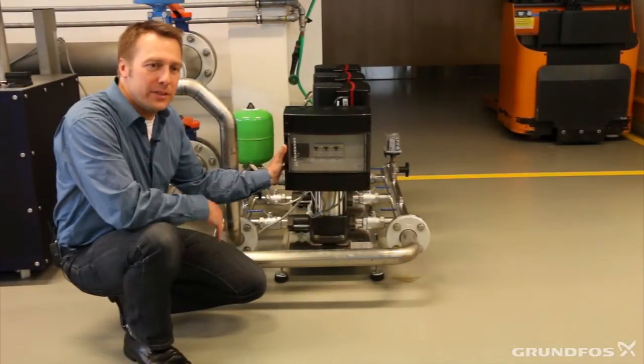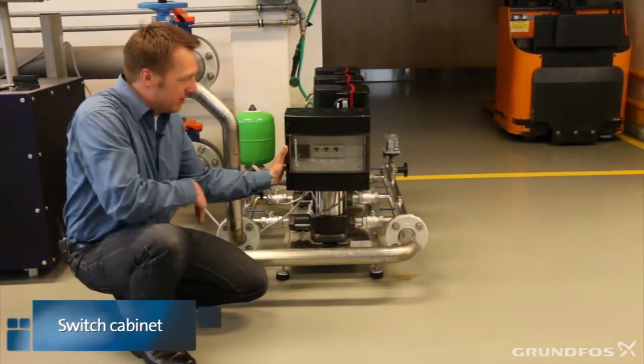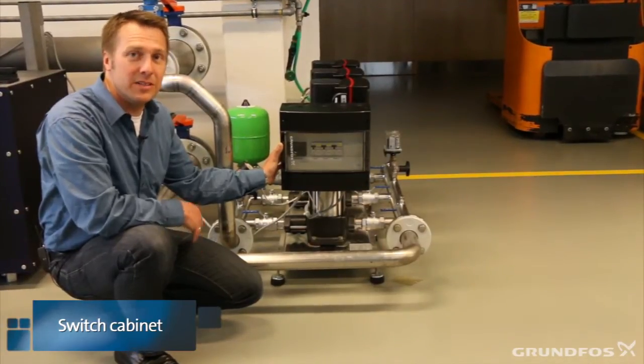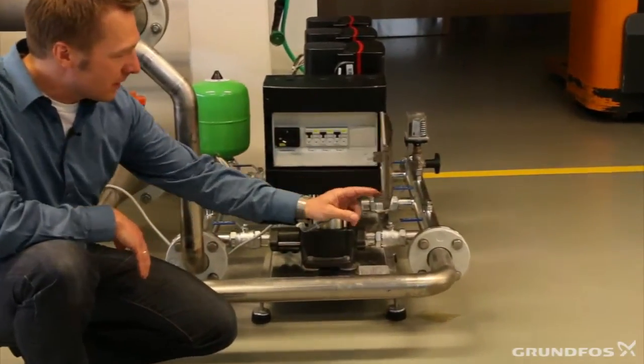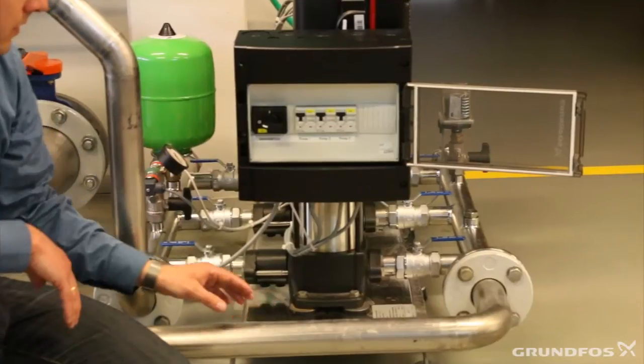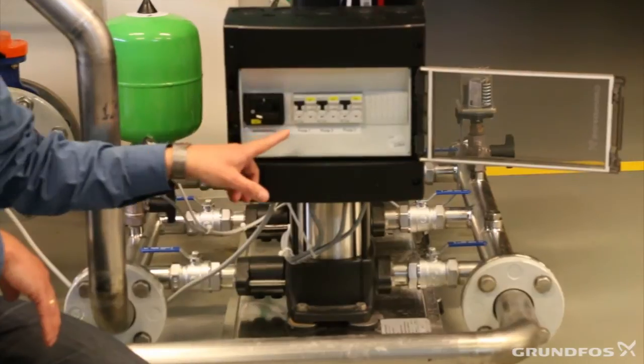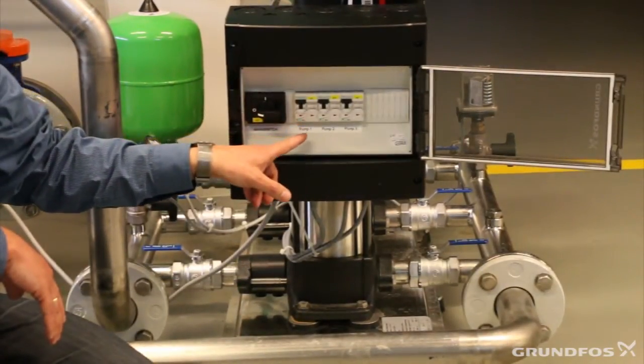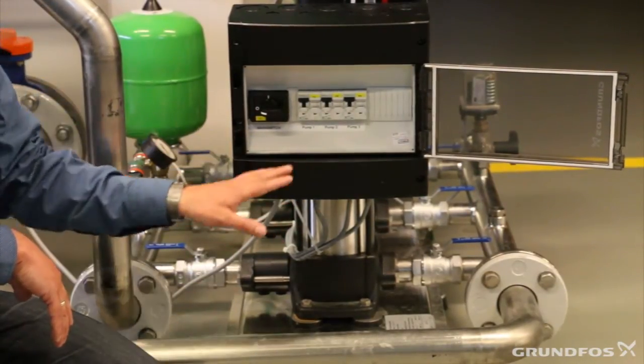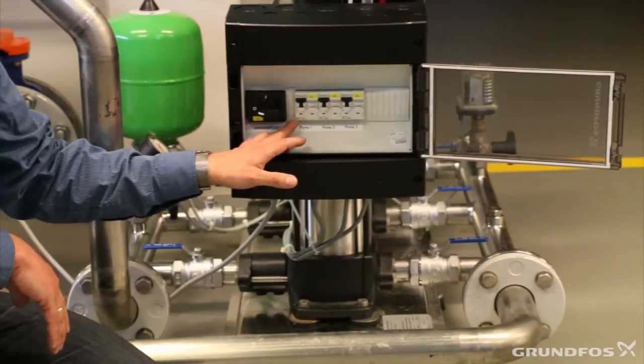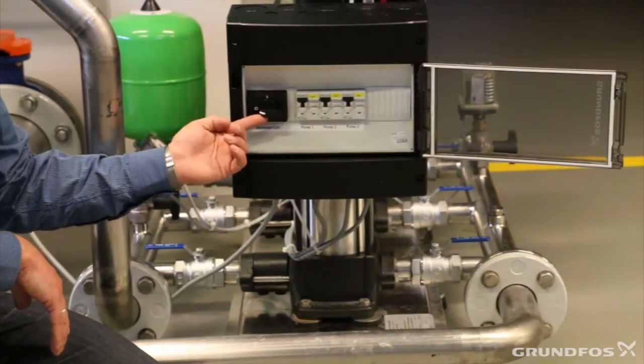The last part that we have in the boosting station, but a vital part, is our switch cabinet. In this case with the Multi-E it's a very simple cabinet. We don't have much in it. Let's have a look inside. We can open the door and what we have is simply a main switch that we can see here and we have circuit breakers, in this case three circuit breakers, one for each pump. Pump one, two and three. These will protect the pumps from short circuits and this is to switch the whole system on and off.